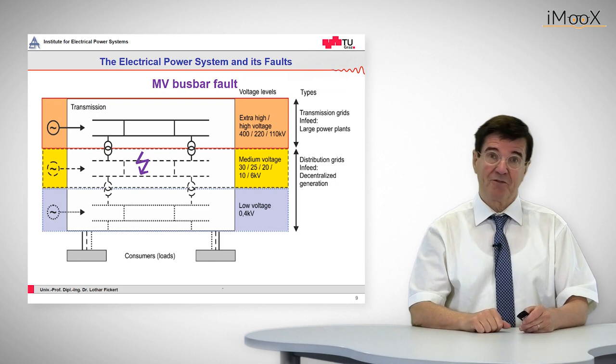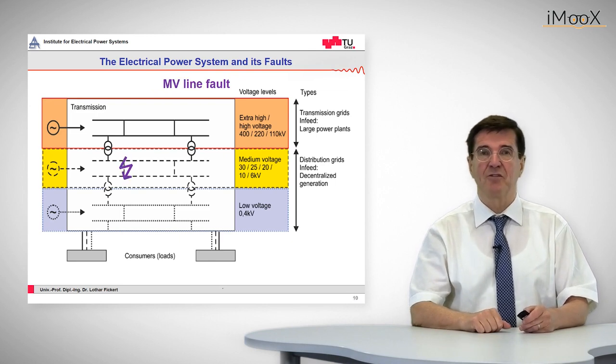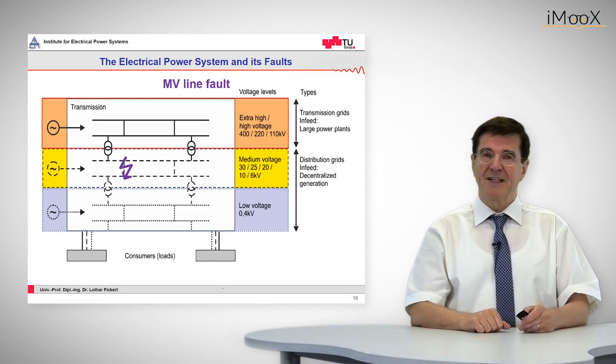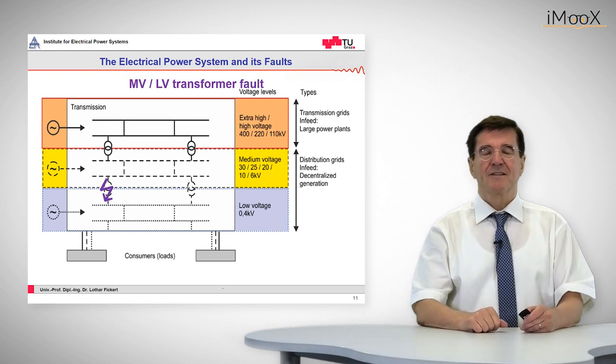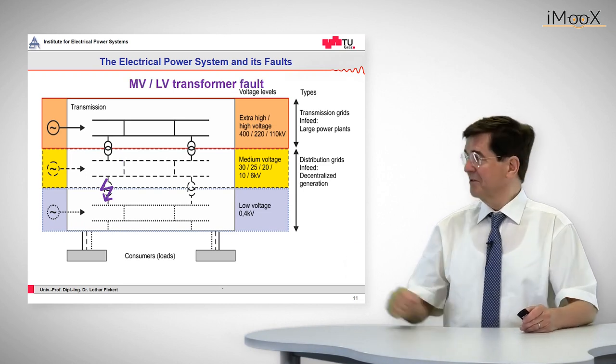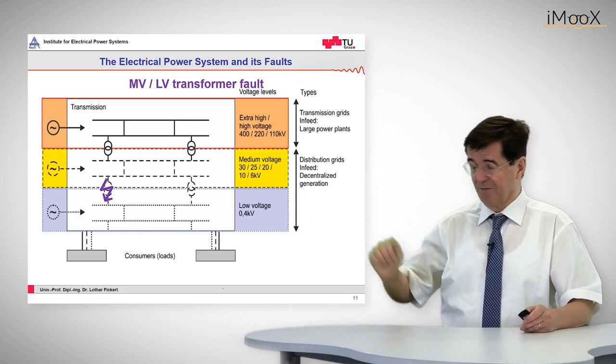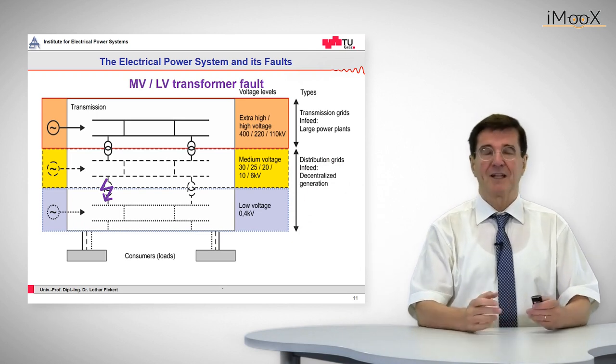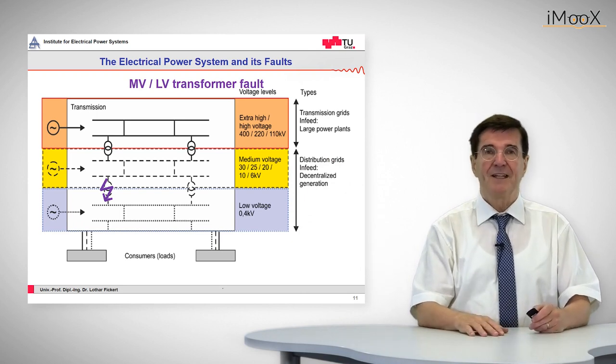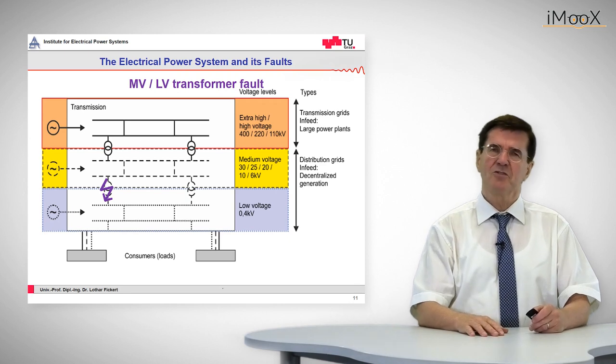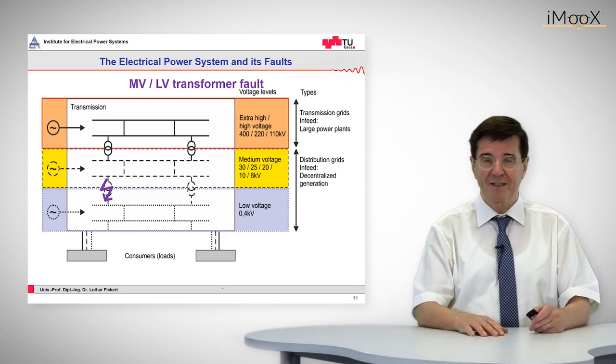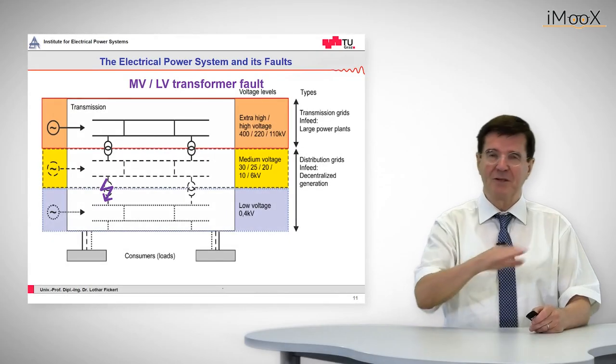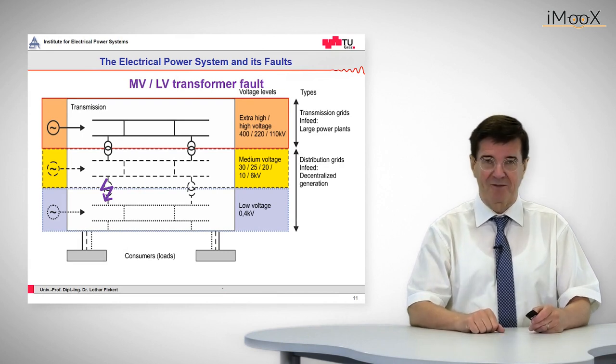We can also have bus bar faults, line faults, and faults in the transformers between medium voltage and low voltage. These transformers are usually located in ring main units, and since the low voltage system is typically made up as radial networks, such a fault trips the consumer's electricity supply.